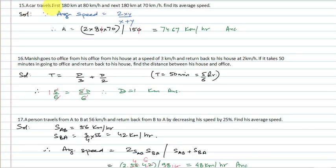Question number 15: A car travels first 180 km at 80 km per hour and the next 180 km at 70 km per hour. Find its average speed.